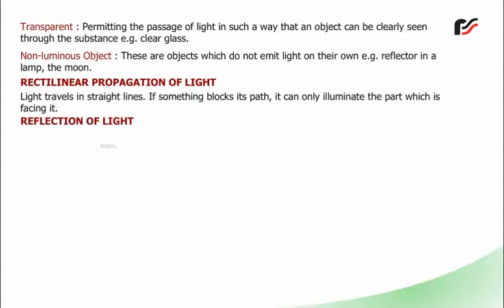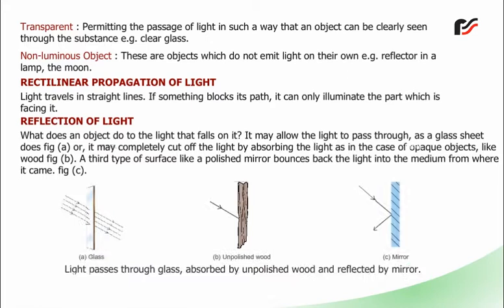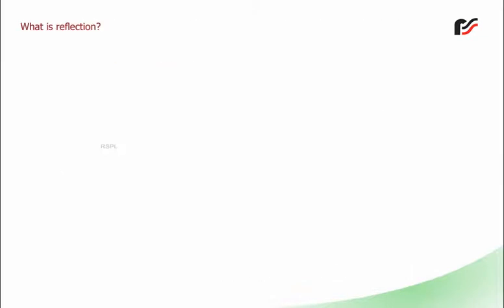Reflection of light: What does an object do to the light that falls on it? It may allow the light to pass through as a glass sheet does, or it may completely cut off the light by absorbing it as in the case of opaque objects like wood. A third type of surface like a polished mirror bounces back the light into the medium from where it came.